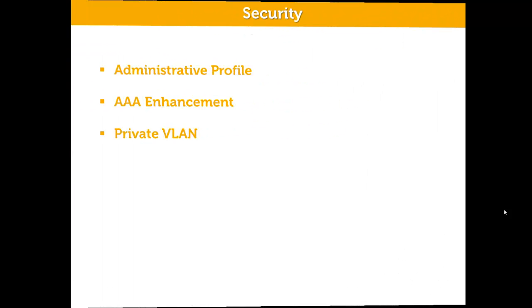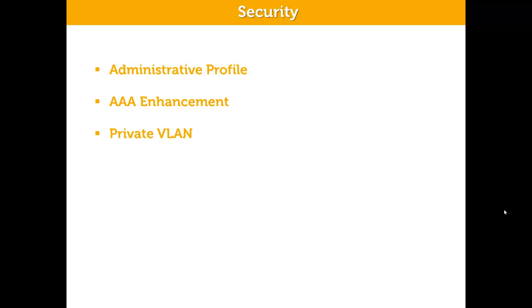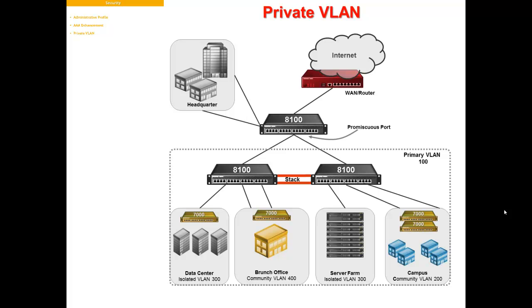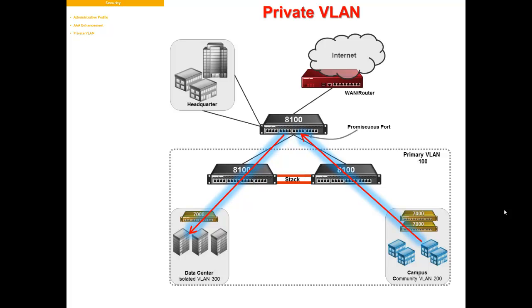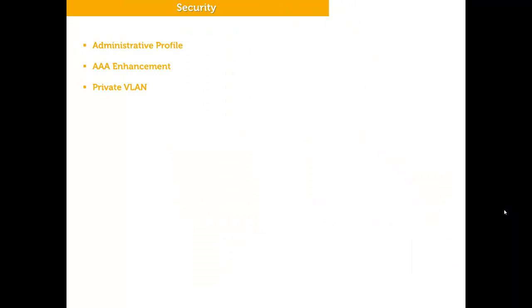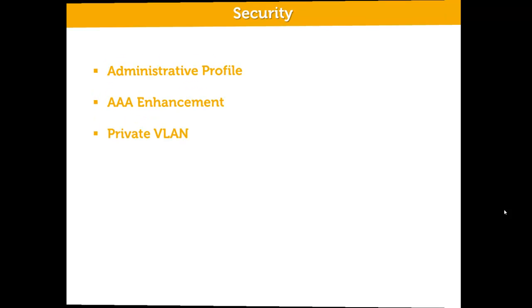Creating a private VLAN is also a new feature of the 5.0 firmware. Private VLAN provides Layer 2 isolation between ports within the same broadcast domain and partitions a standard VLAN domain into a set of subdomains. It supports promiscuous, isolated, and community port roles. Community ports are able to communicate among themselves and with their promiscuous ports. An isolated port is able to communicate only with endpoints connected to its promiscuous ports.